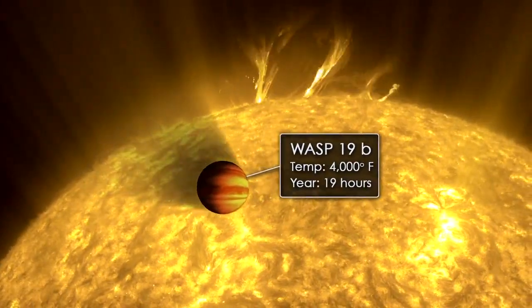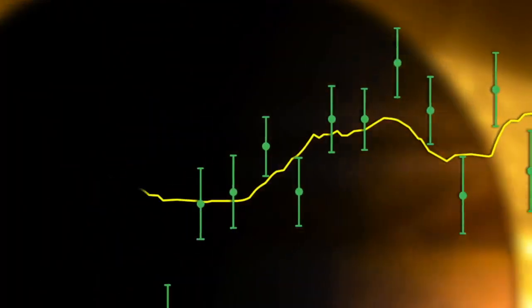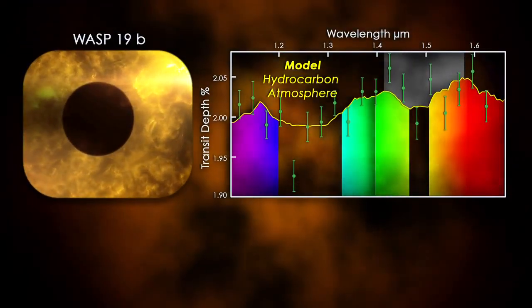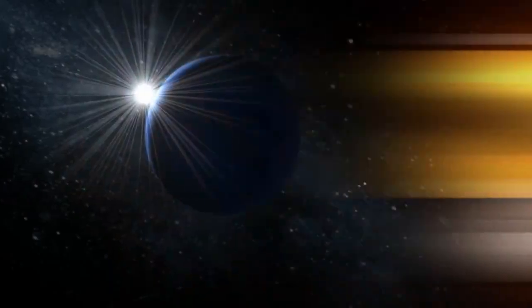Visitors who could survive the heat might complain about the air quality. Planet WASP-19b's jagged transit depth curve suggests a deep atmosphere of poisonous hydrocarbons, with methane and hydrogen cyanide far more abundant than water.